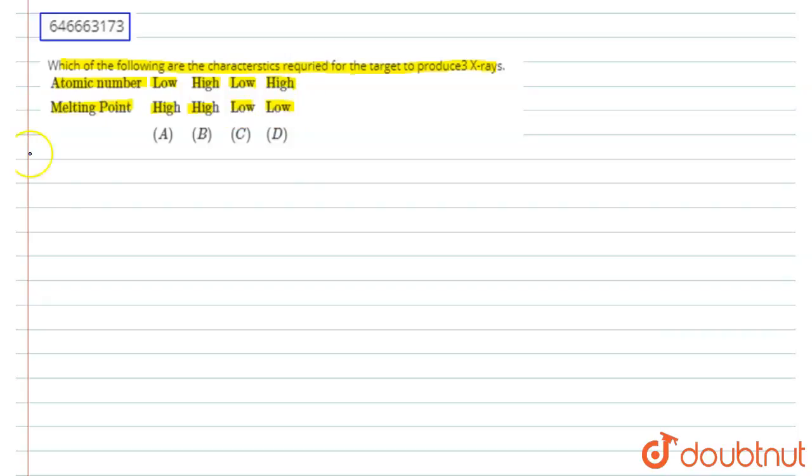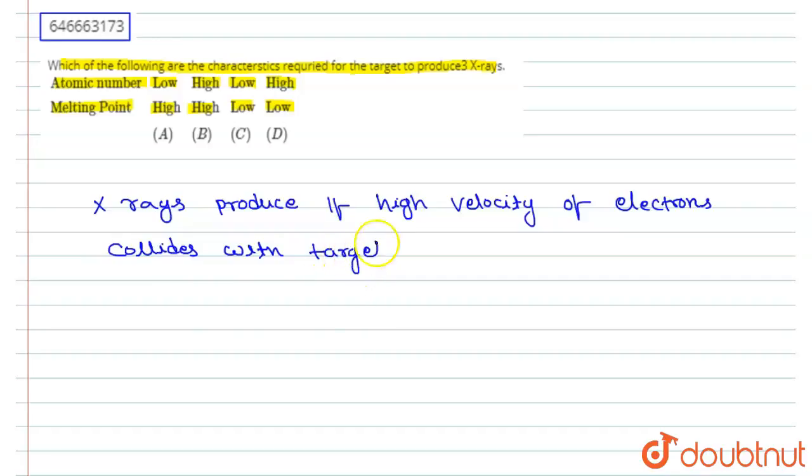Now we have to see which one is correct. So we know that X-rays are produced if high velocity electrons collide with the target.